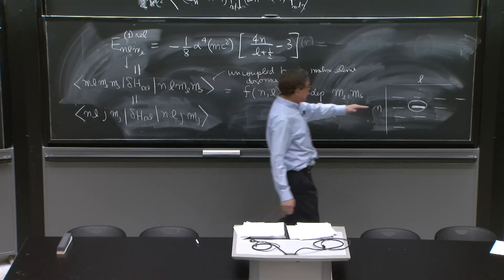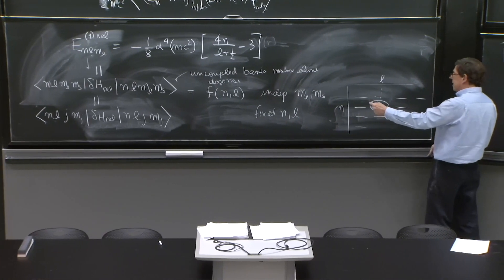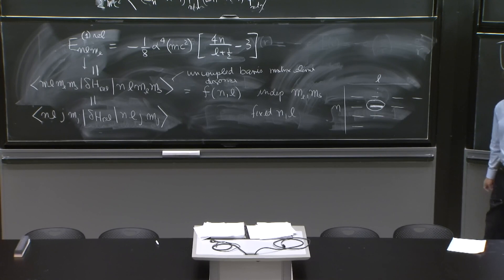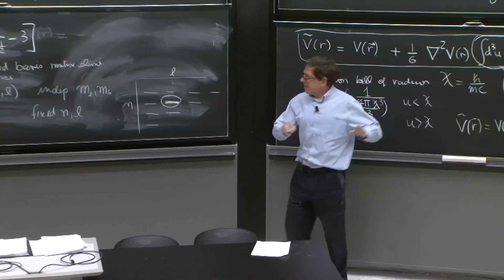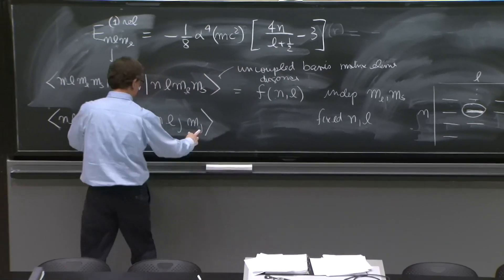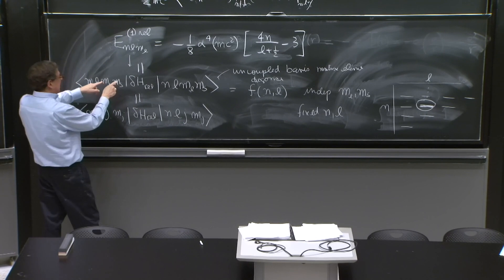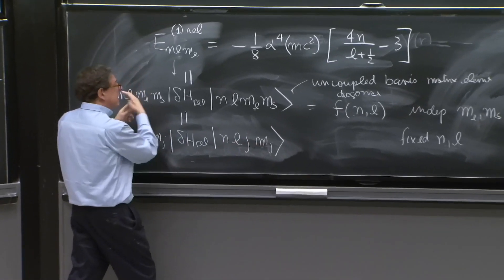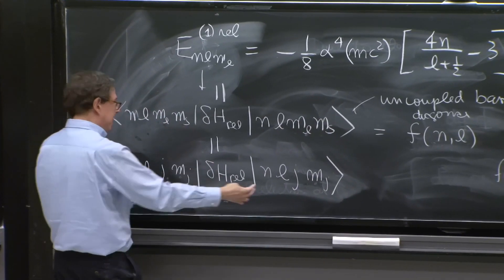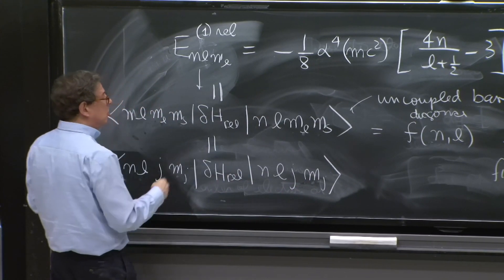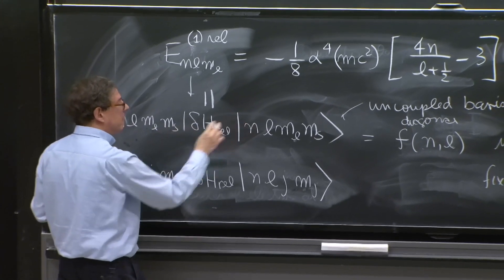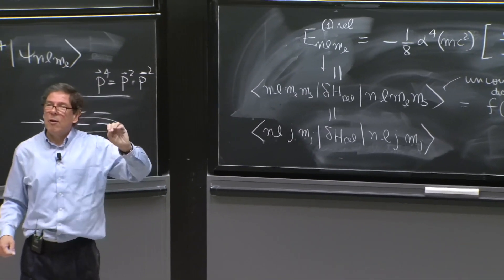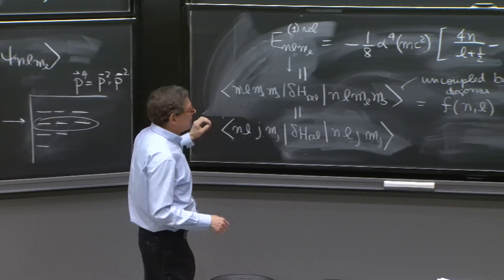So the fact that every state here is some linear combination of states in the uncoupled basis with different values of ml and ms that add up to mj. But this answer doesn't depend on ml and ms. So whatever linear combination you need, it doesn't change. Because the answer doesn't depend on ml and ms. So this must be the same as that. I'll give another argument, maybe a little more abstract, but clearer, perhaps.